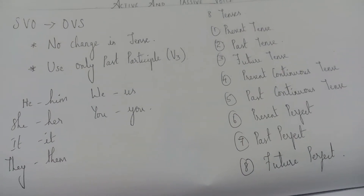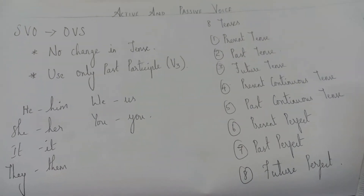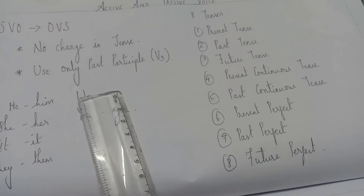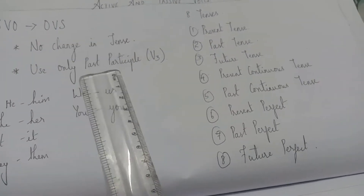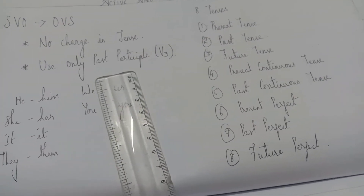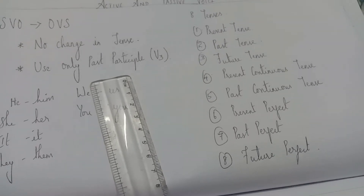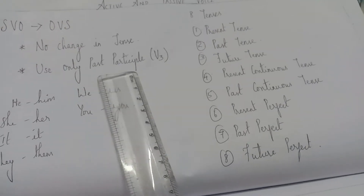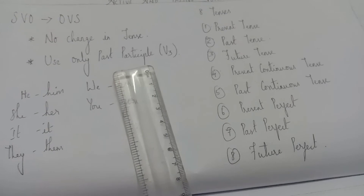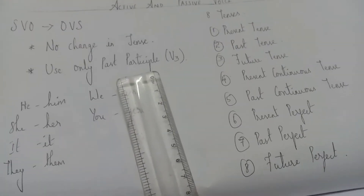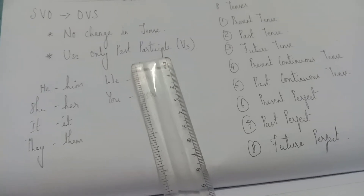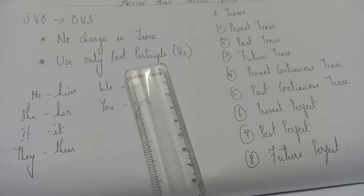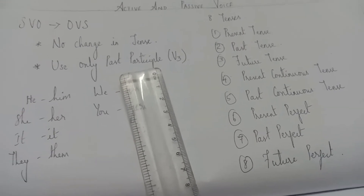The third thing you have to remember is: while changing active into passive, you have to use only the past participle verb — that is, verb 3 form. Verb 1, verb 2, verb 3 — present tense, past tense, past participle. For example: go, went, gone. 'Gone' is the verb 3 form, and we have to use only past participle.